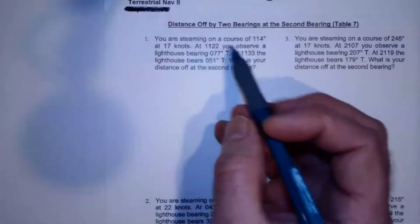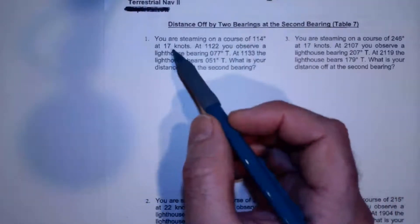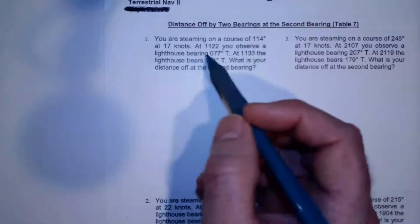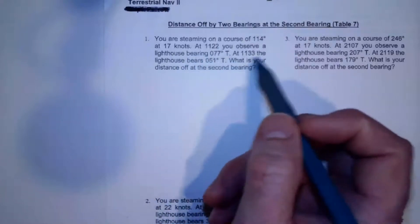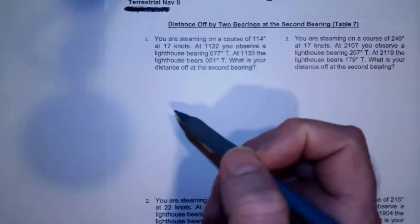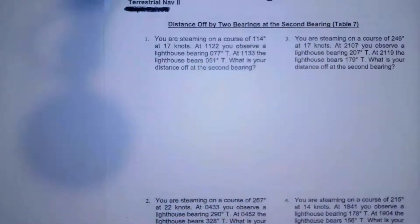So we're steaming on a course of 114 at 17 knots. At 1122 we observe a lighthouse bearing 077. At 1133 the lighthouse bears 051. What is your distance off at the time of second bearing?